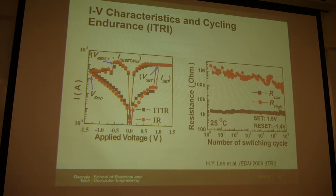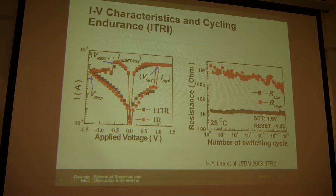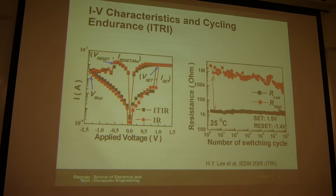The typical IV characteristics look similar to the previously measured sample. For endurance testing, set and reset pulses are applied — 1.5V for set and −1.4V for reset — and the resistance is read after each operation. This constitutes one cycle. Repeating this shows the resistance change over cycles, giving the memory window. This single cell was cycled up to 10^6 times and still showed a clear window, which is a good result.